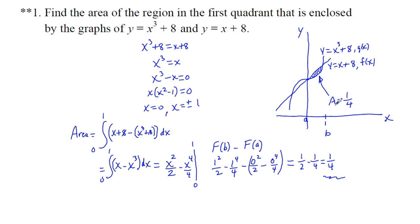One thing that can happen is that you can work this out and get a negative sign because you subtracted the wrong function from the other. If that should ever happen and you find yourself with a negative number, you can make things right with absolute value brackets, but you'll need to redo your work on the free response section of the test.